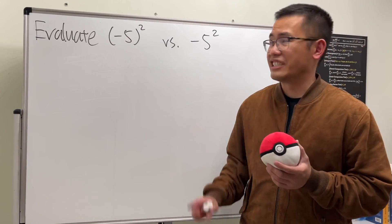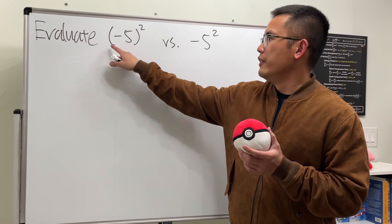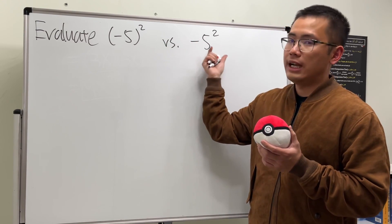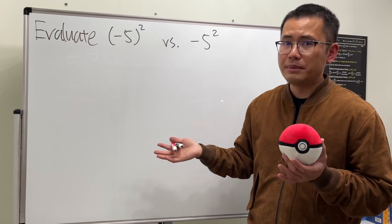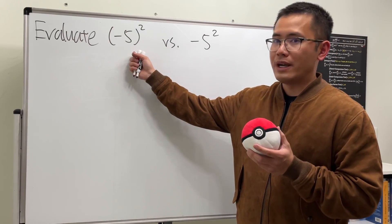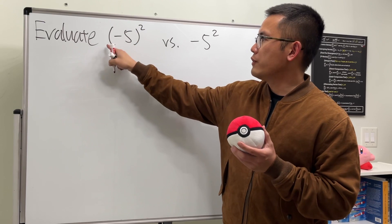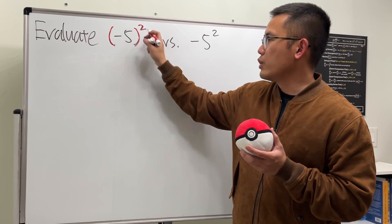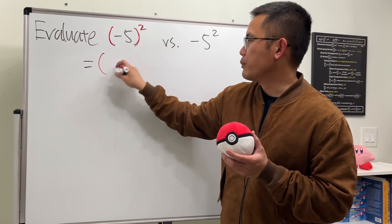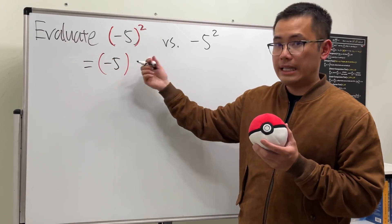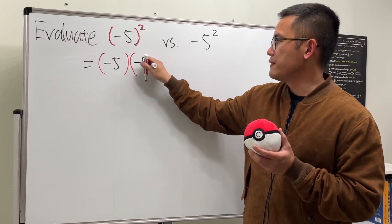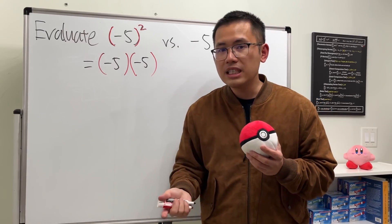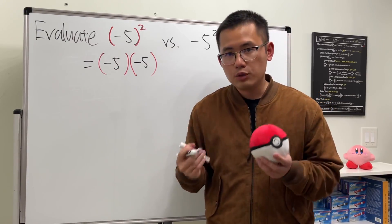A lot of algebra students make the following mistake. We are going to evaluate parentheses with negative 5 inside to the second power, and notice that for the second question we do not have the parentheses — so does it really matter? Of course it does. For the first one, the square applies to the whole thing, so we write negative 5 times negative 5. Negative times negative gives us positive, and 5 times 5 gives us 25.